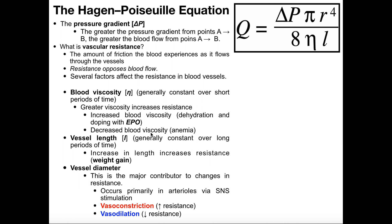A decreased blood viscosity will increase blood flow. Anemia, even though it's bad, does decrease blood viscosity and that will increase blood flow. That's also what happens if somebody takes a blood thinner like warfarin (Coumadin) — it inhibits blood clotting and thins your blood, decreasing blood viscosity, which actually helps eliminate some of the risk of having a stroke. So decreasing blood viscosity increases blood flow, while increasing blood viscosity decreases blood flow.